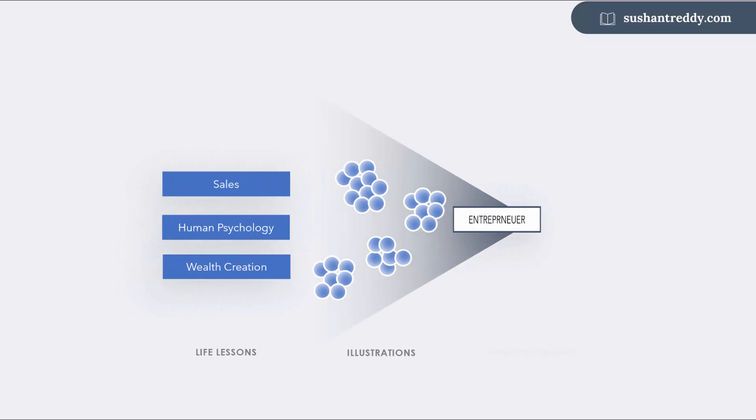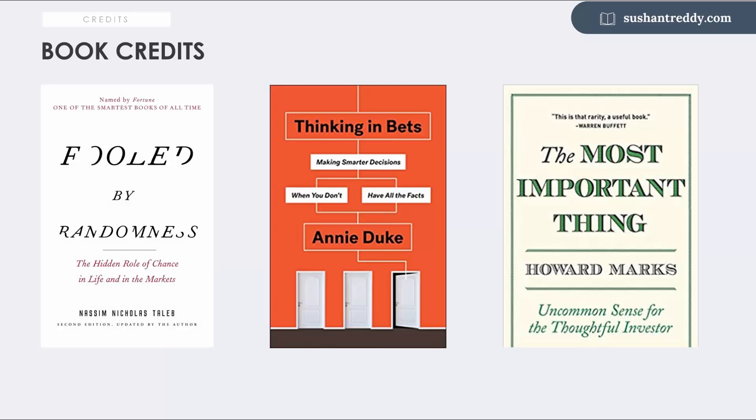Welcome to my YouTube channel Sushant Ready. Every week I present my life lessons as an entrepreneur in sales, human psychology and wealth creation. For this episode I refer to the ideas of Nassim Taleb from his book Black Swan and Fooled by Randomness, Annie Duke author of the book Thinking in Bets, and Howard Marks, a legendary investor and founder of Oaktree Capital.